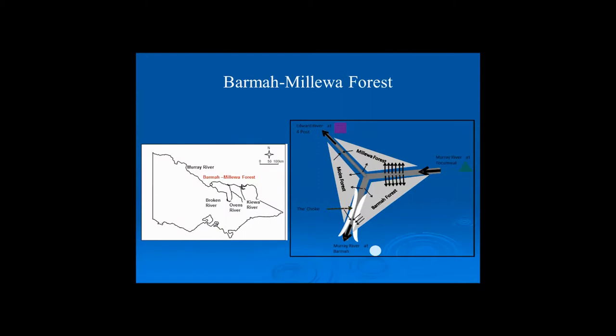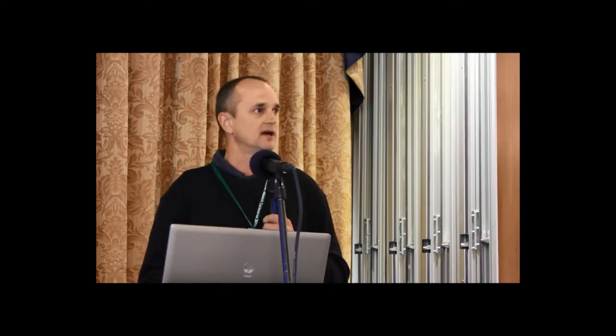We had one site upstream of the forest, before any impact of the forest itself, located at Tokenwall. We had two sites at the bottom end of the forest: one on the Edward River at Forepost, just upstream of Deniliquin, and one at the bottom end around Barmah.